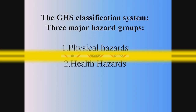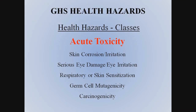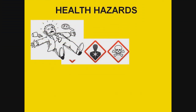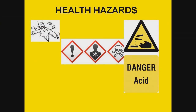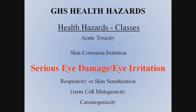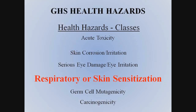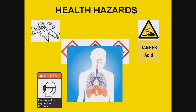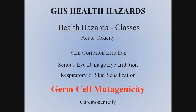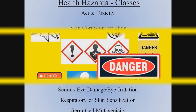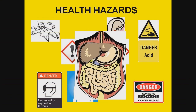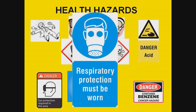The next major hazard group is health hazards. Examples include acute toxicity — for example, hydrogen cyanide is a highly toxic substance and acute exposure at relatively low doses can result in death. Skin corrosion or irritants can cause severe skin burns and eye damage. Other health hazards include serious eye damage or eye irritation, respiratory or skin sensitization, germ cell mutagenicity — chemicals which may cause mutations in germ cells that can be transmitted to offspring — carcinogens associated with causing cancers, chemicals affecting reproductive or specific organs, and aspiration hazards.